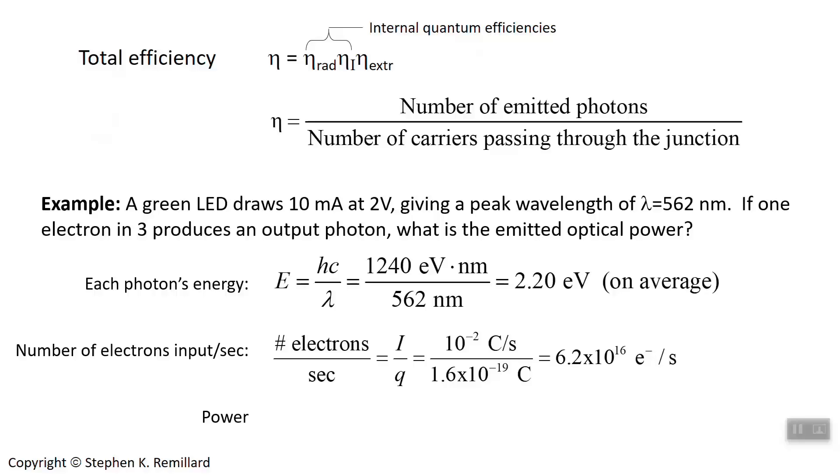So now to get the power coming out, we know how many electrons go in. So do you know how many photons come out? Each 3 electrons produces 1 photon. So take that 6.2 and divide by 3. And you have the number of photons being emitted times 10 to the 16th each second.